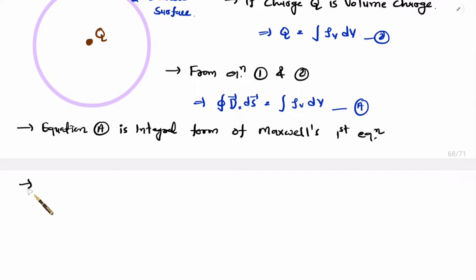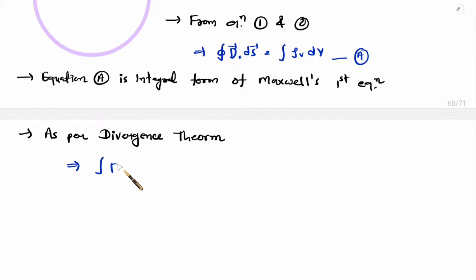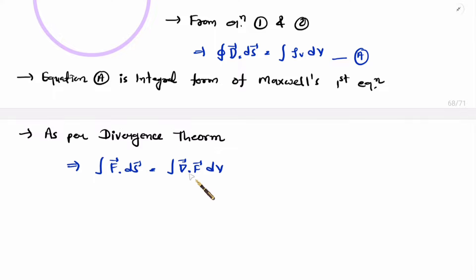Now I will derive Maxwell's first equation in differential form. To derive differential form, one should know the divergence theorem. As per divergence theorem, surface integration of any function equals the divergence of that function's volume integration. Divergence theorem explains the relationship between surface integration and volume integration.